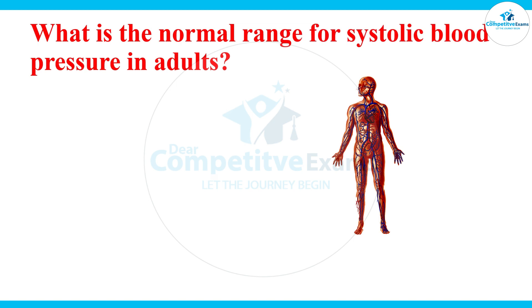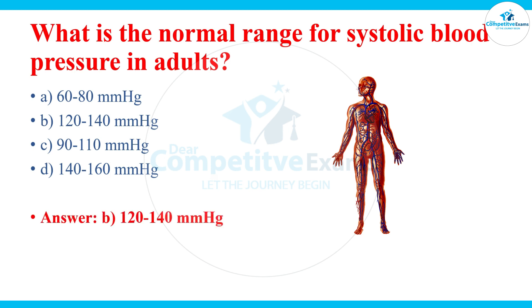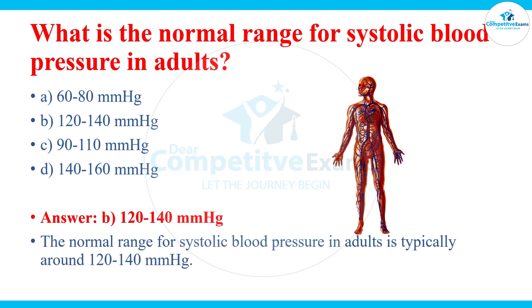What is the normal range for systolic blood pressure in adults? The answers are 60 to 80 mmHg, 120 to 140, 90 to 110, or 140 to 160. The answer is 120 to 140 mmHg — the normal range for systolic blood pressure in adults is typically 120 to 140.